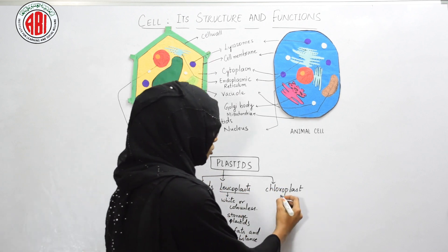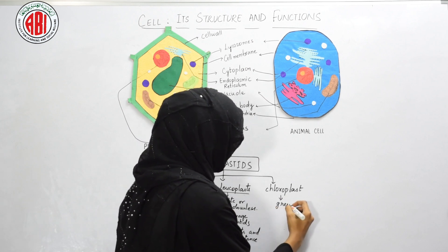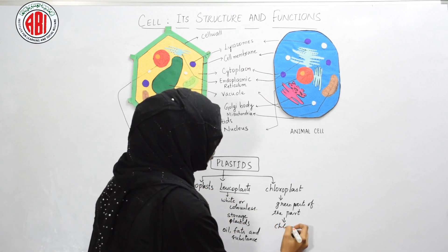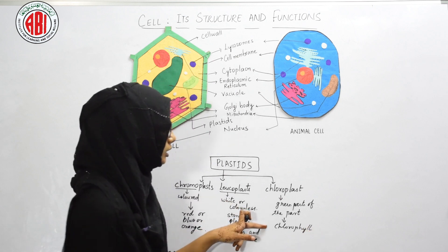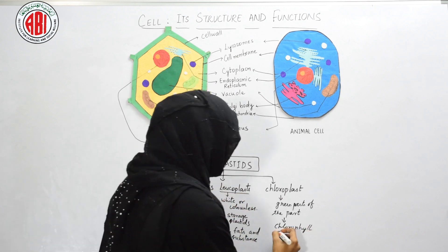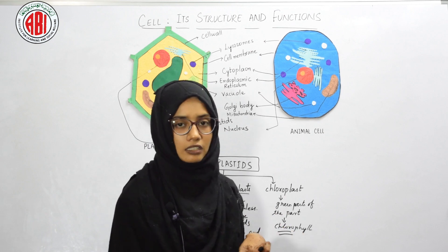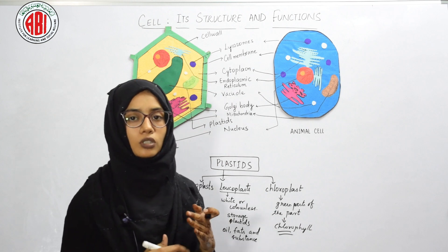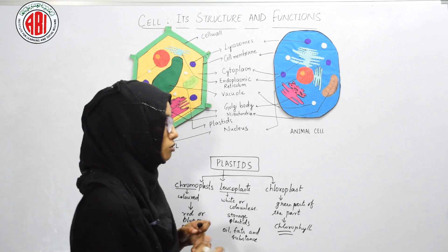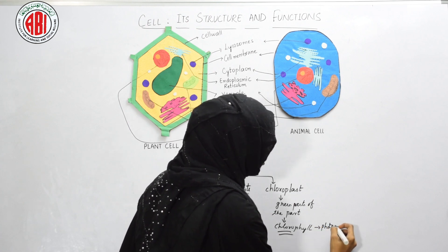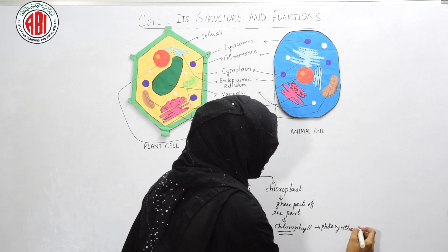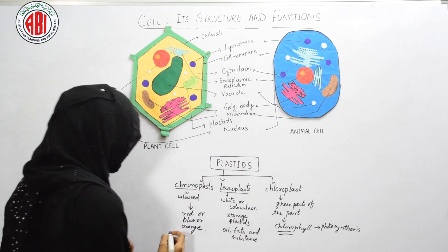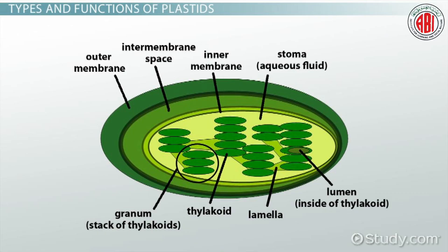Chloroplasts contain a green pigment called chlorophyll, which is responsible for imparting green color to leaves and other parts of the plant. The primary function of chlorophyll is to trap energy from sunlight and convert it into chemical form to carry out the process called photosynthesis. In simple words, chloroplasts help in carrying out photosynthesis in plants.